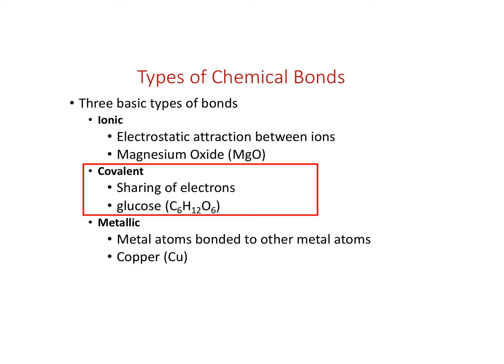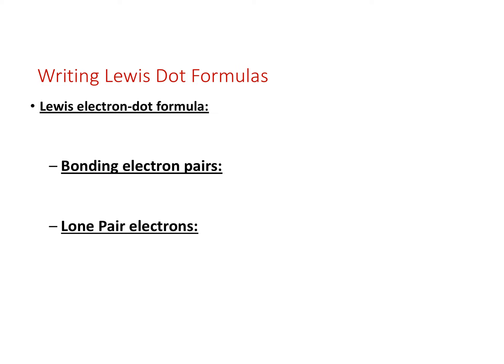Today the focus of this lecture will be covalent bonds where we're sharing electrons. Last class we looked at HCl and the Lewis dot formula for HCl. We had hydrogen with its one electron, and chlorine with its seven electrons. Together they share one electron each to fill the outer shell of both. Hydrogen ends up being isoelectronic with helium, having two electrons, and chlorine ends up with a full octet once it shares that one electron from hydrogen.